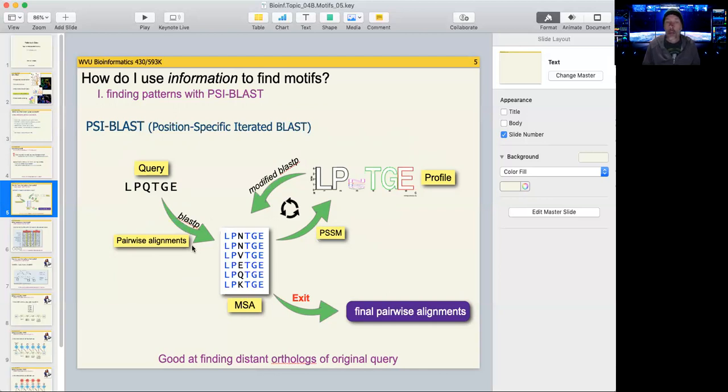It runs a BLAST P and it creates a number of pairwise alignments as we've discussed in previous slides. From those pairwise alignments, it takes the top however many, 25, 50, 100, and creates a multiple sequence alignment.